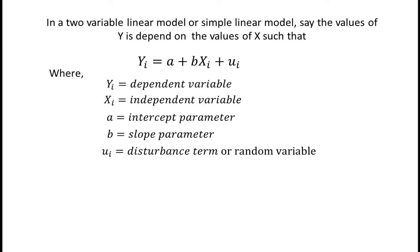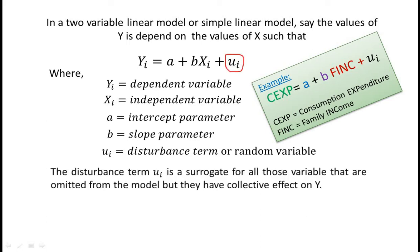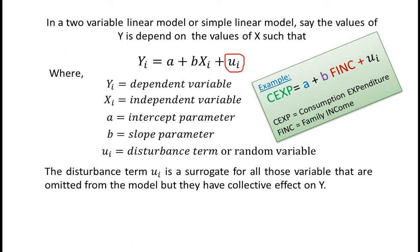An example of a two-variable linear model may be taken as: consumption expenditure is a function of family income. So the model may be framed as: consumption expenditure = a + b*(family income) + u_i, where u_i is the disturbance term or random variable.